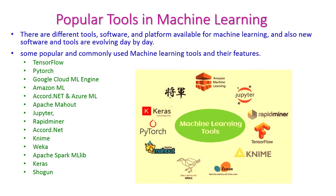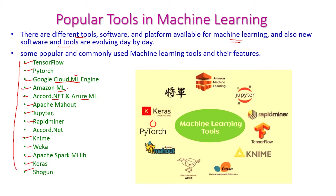There are different tools and software available to solve machine learning problems, and new software is coming up day by day. Some of the popular commonly used machine learning tools are TensorFlow, PyTorch, Google Cloud ML Engine, Amazon ML, Accord.NET, Azure ML, Apache Mahout, Jupyter, RapidMiner, Weka, Apache Spark MLlib, Keras, and Shogun. Apart from these, there are other products also available to solve machine learning problems.